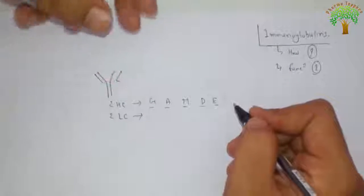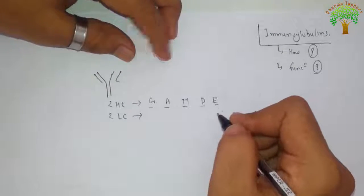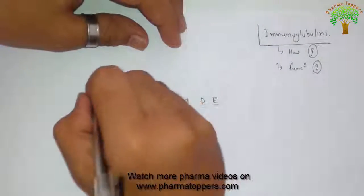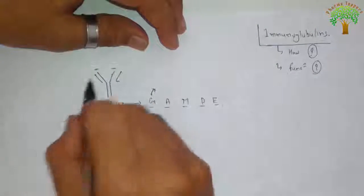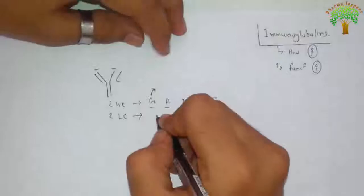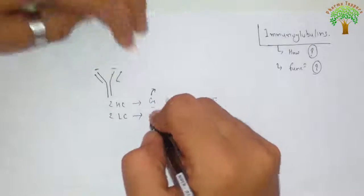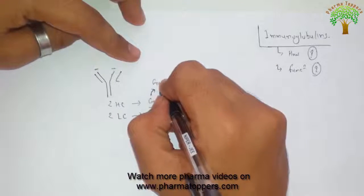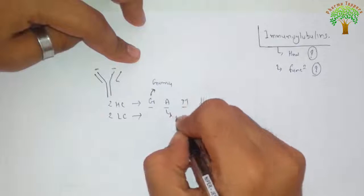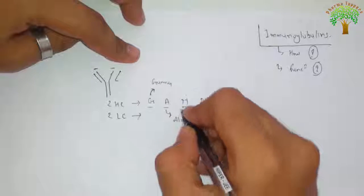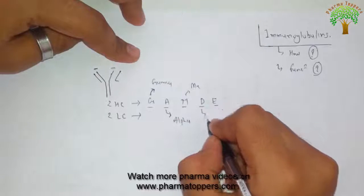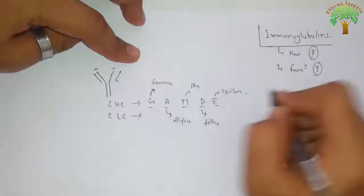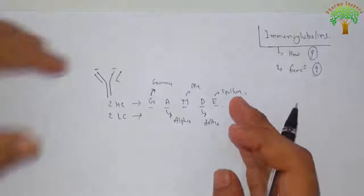Each one is the representative of the initial letter - if the immunoglobulin is having the gamma heavy chain, and these two chains are identical in nature, so if this one is gamma, this one is also gamma. So if the immunoglobulin contains gamma heavy chain, then it is termed as gamma globulin. If it contains alpha heavy chain, mu heavy chain, delta heavy chain, or epsilon heavy chain. So this is the basic classification on the basis of heavy chain.